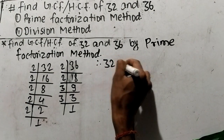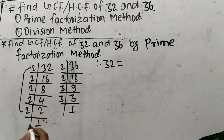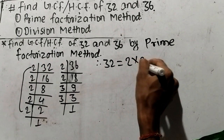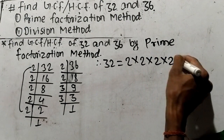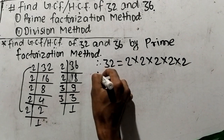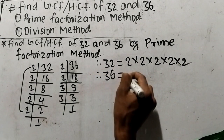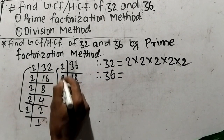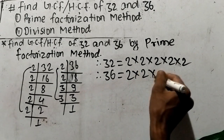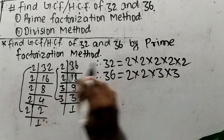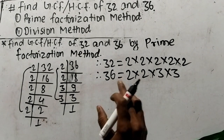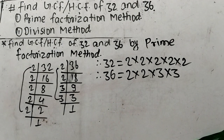From these prime factors, we can write 32 is equal to 2 times 2 times 2 times 2 times 2, which is 2 to the power 5. In the same way, we can write 36 is equal to 2 times 2 times 3 times 3. So we have taken out the prime factors of 32 and 36.